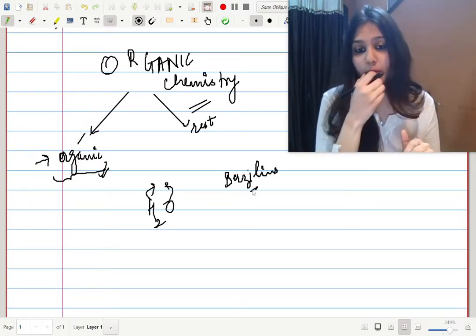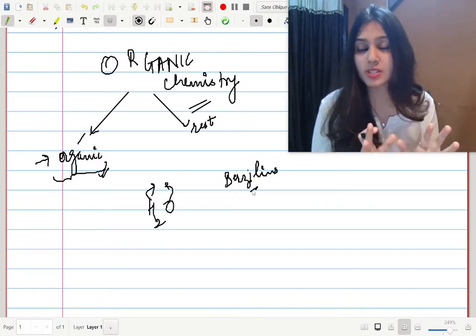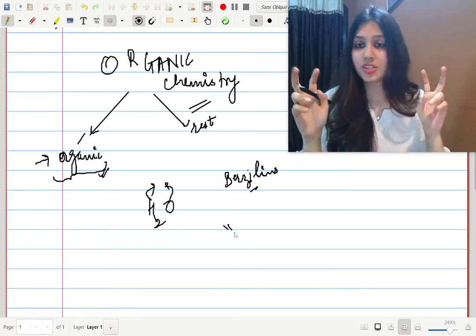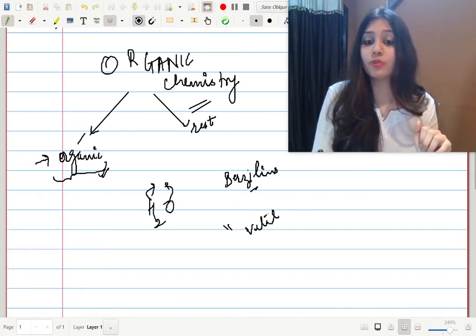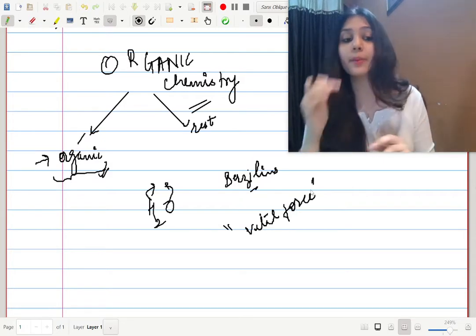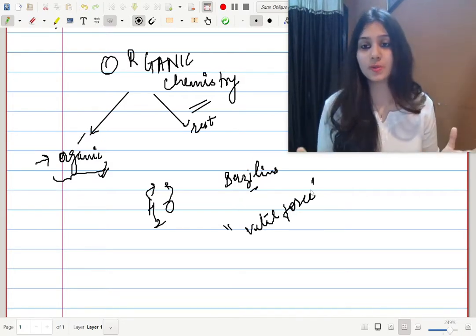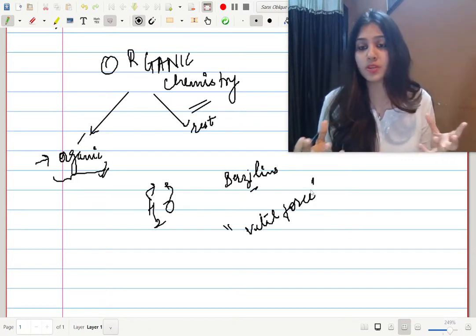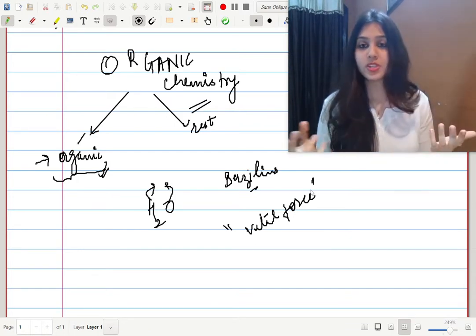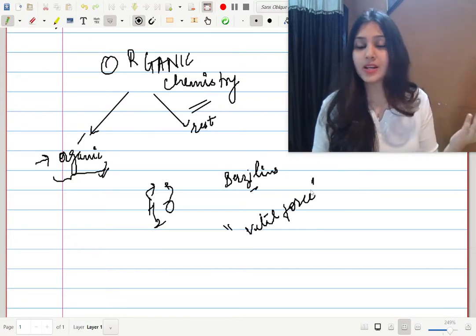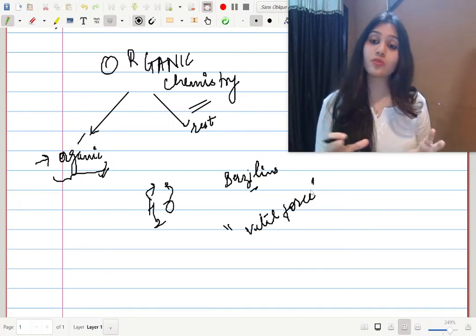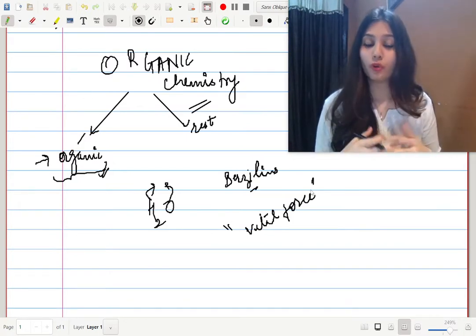Berzelius said that to make any organic things, you need a vital force which only nature can provide. That's why we get all organic things only from nature, like fruits and vegetables. We don't grow fruits and vegetables in lab, we don't make them in lab. That vital force of nature is necessary for the formation of all these natural substances.